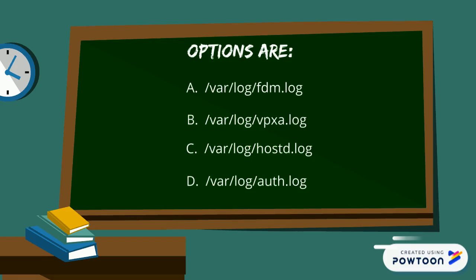Let's review the options again. fdm is used for HA debugging. Option c) hostd is used for host-specific operations, so it cannot be the answer. Option d) auth.log is more about authentications. Therefore, the correct answer is b) vpxa.log, which is used to communicate between vCenter server and ESXi host. The answer is b.